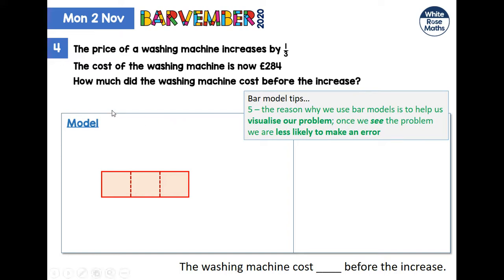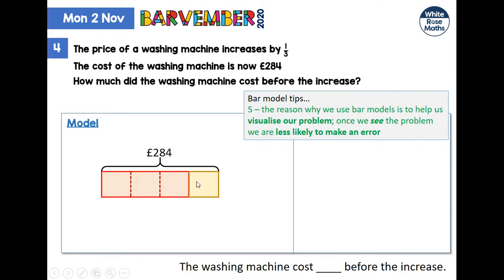That's our washing machine — one bar. We're told that the price increases by a third, so we add on another third. The cost of that washing machine is now £284. We can see that we have equal parts, but not three equal parts — we have four equal parts. How much did the washing machine cost before the increase? That is the three original thirds.